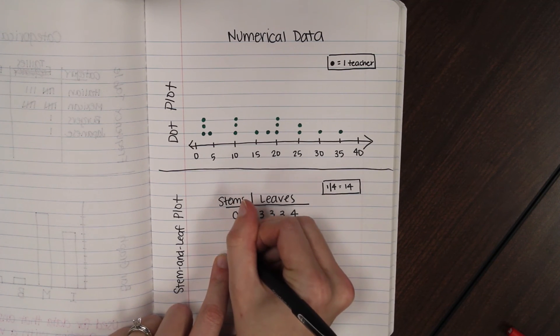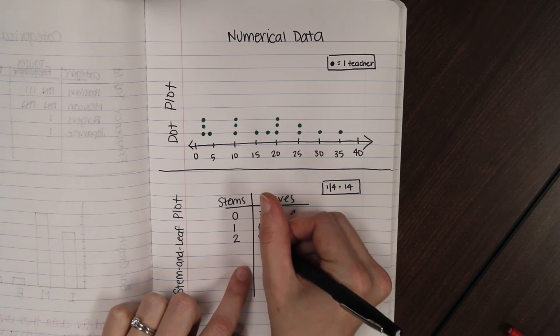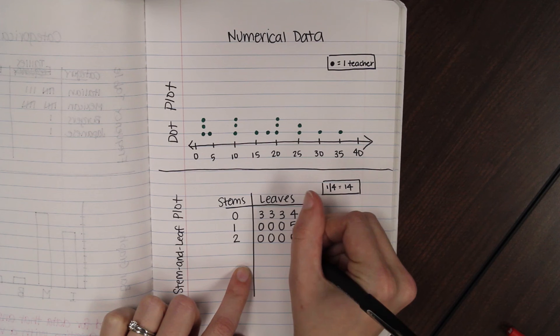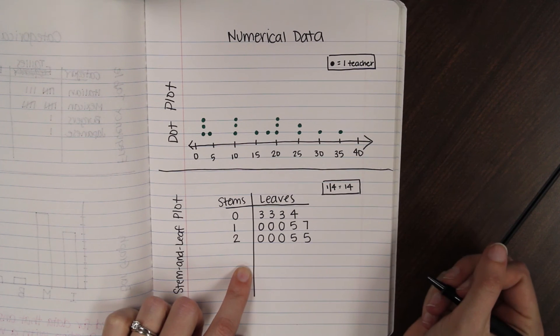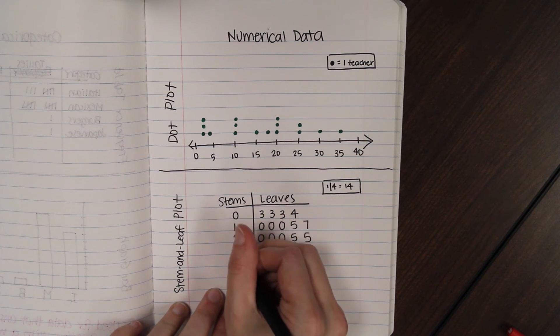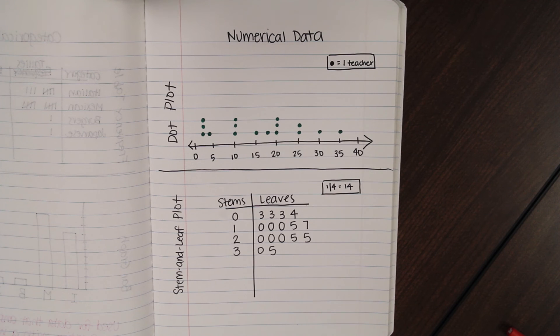All right. If we have two tens, we had a couple of those. We had some twenties and some twenty-fives. We had three twenties and two twenty-fives. And then we had two that had three tens, a thirty and a thirty-five.